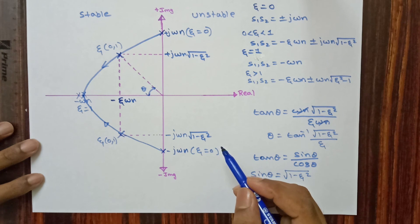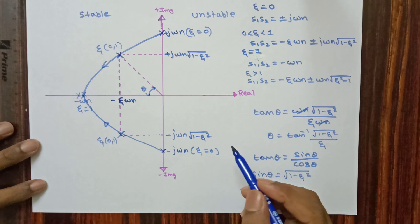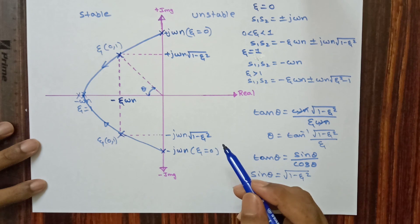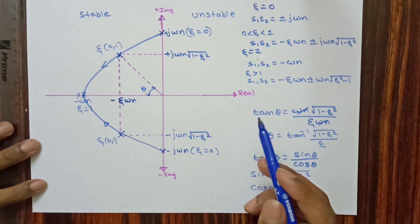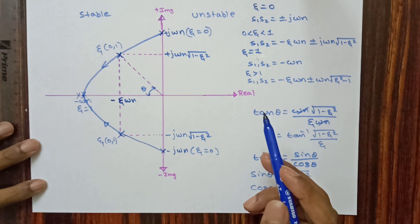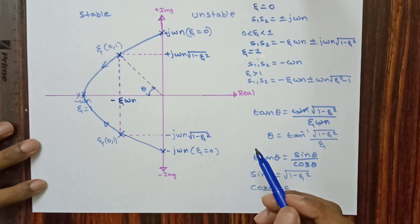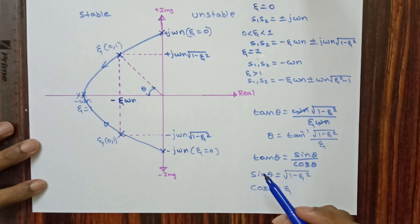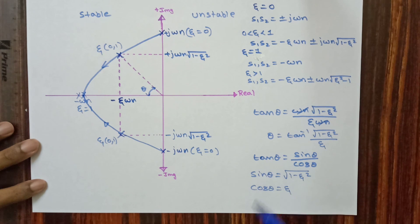In the next video, we will see the analysis of the second order system by considering a specific input and will observe different outputs for different zeta values. Hope you understood this video. For more such videos, please like and subscribe to my channel. Thank you.